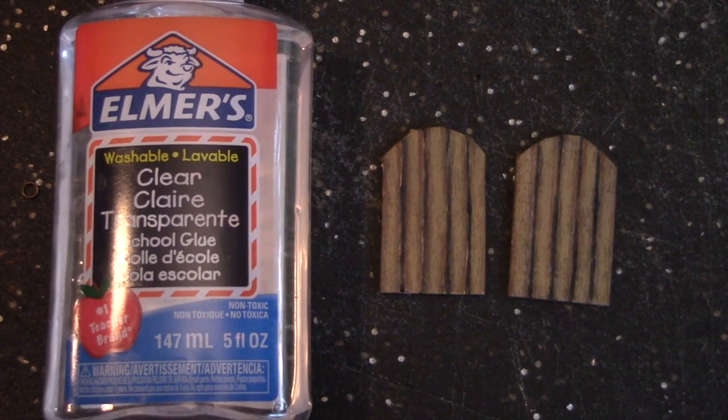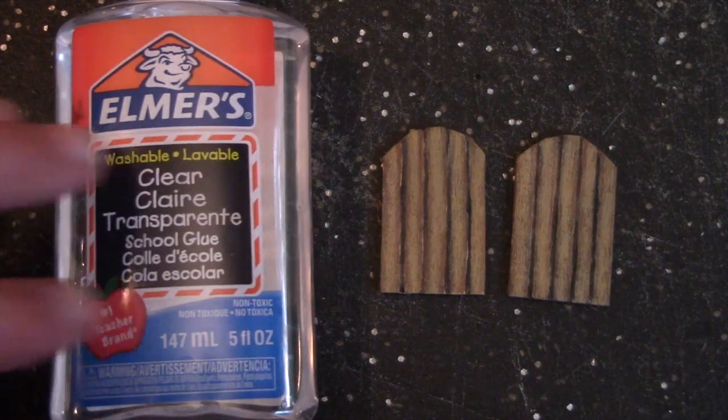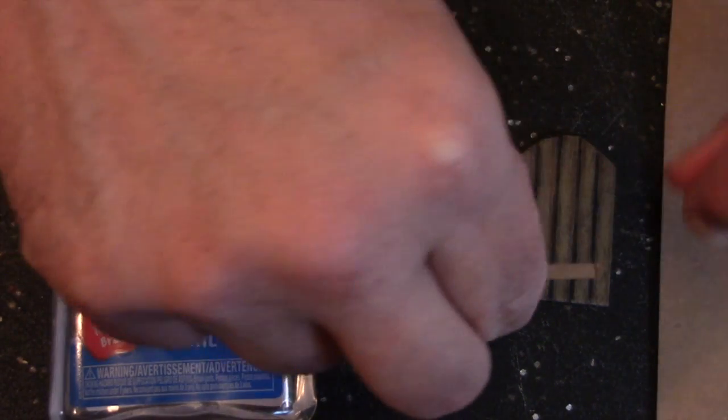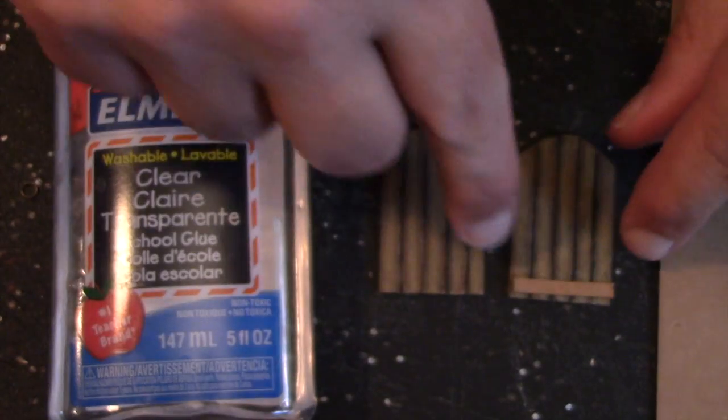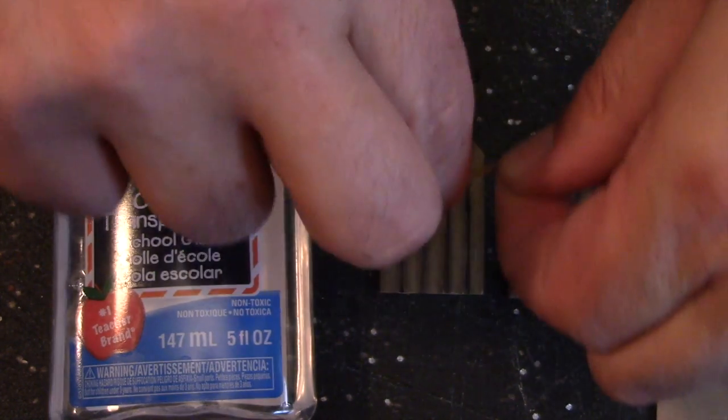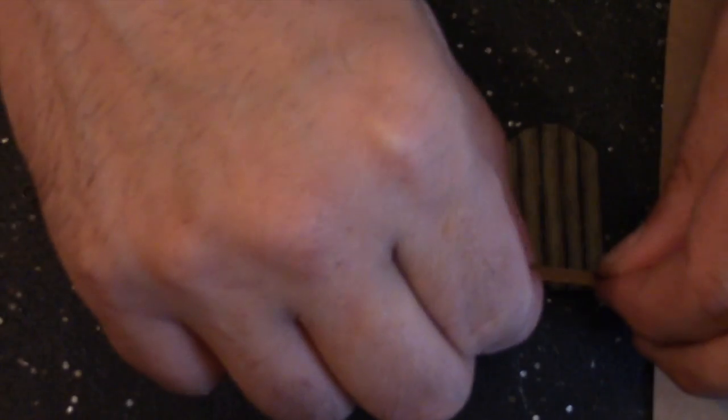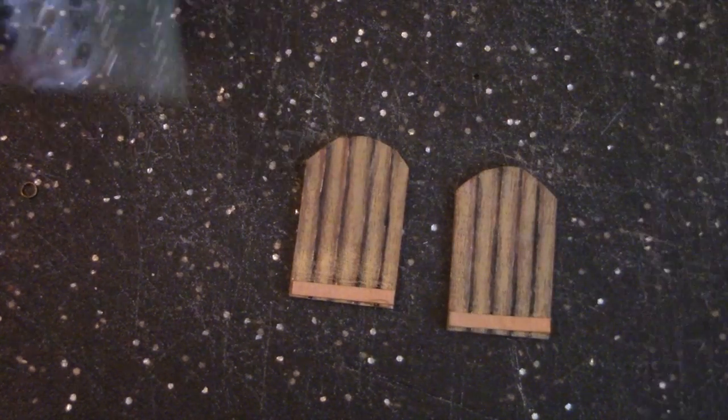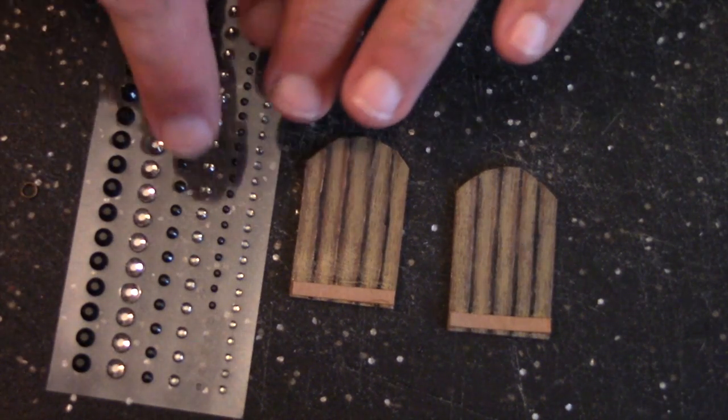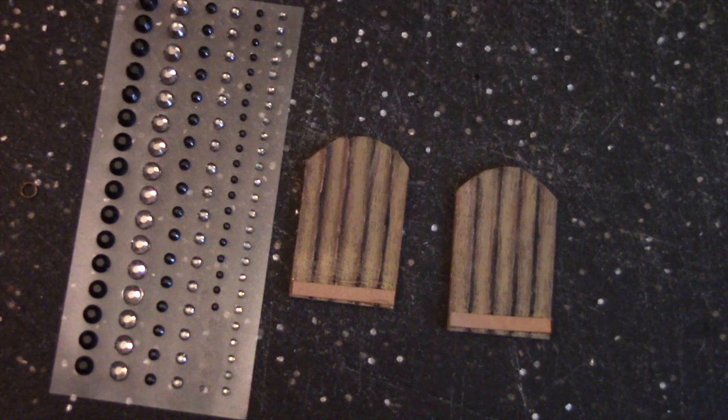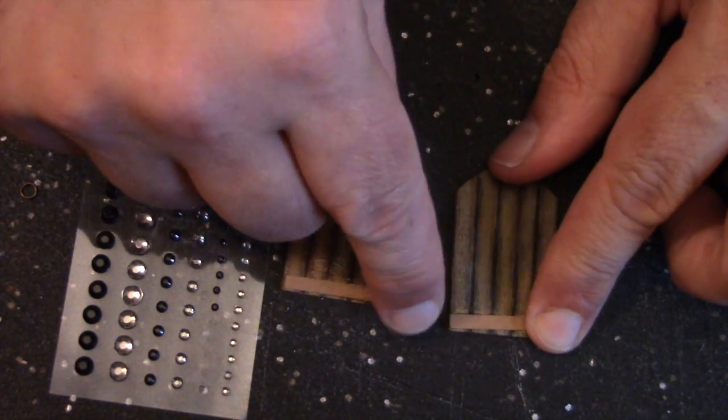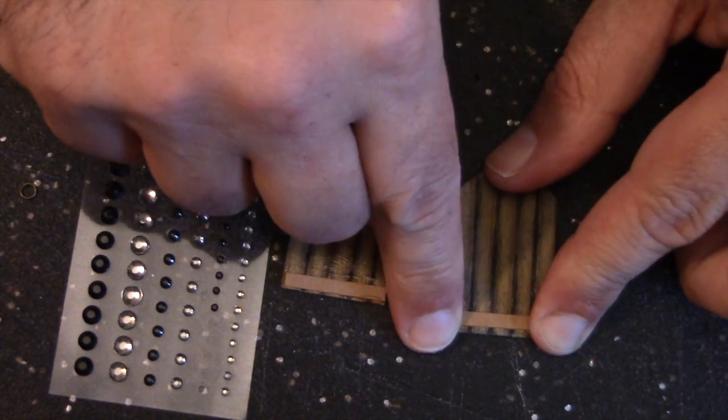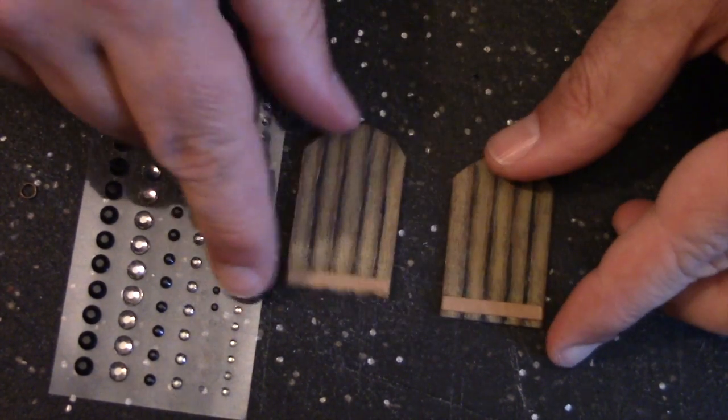A door like this is going to have banding and ornamentation, and to put that on, we're going to use this clear glue. The banding that's going to go on the bottom of the door is cut from a cereal box, and we're just going to attach it with the glue. In the jewelry section of your craft store, you're going to find rhinestones, tiny rhinestones like this, and what we're going to do is use those as rivets on the banding.